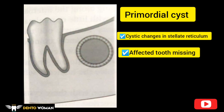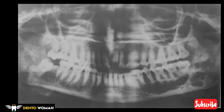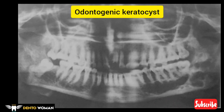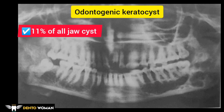When the affected tooth is missing, the primordial cyst may be associated with an erupted or over-retained deciduous tooth. Here in this radiograph you can see a multilocular KCOT seen in relation to the mandibular premolar and molars on a panoramic radiograph. Many people believe these cysts are the same as primordial cysts, but this view is not universally accepted. Keep in mind that 11% of all jaw cysts are keratocystic odontogenic tumors.